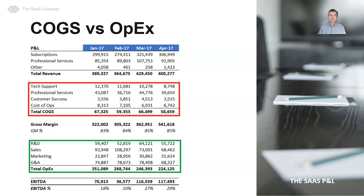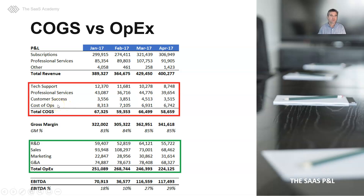So this is a SaaS P&L, COGS versus OPEX. In the top red box, we have our traditional COGS departments. That includes tech support, professional services, customer success if they don't sell, and cost of ops or DevOps that hold our hosting and third-party product cost buried in our software.